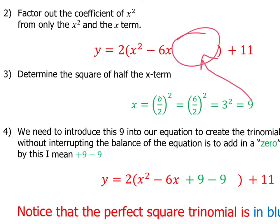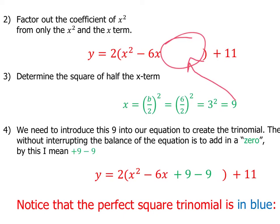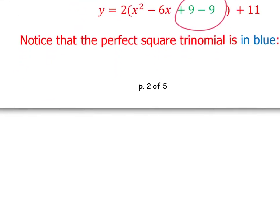Now, the thing is, we have to keep in mind, is that when we introduce a new number into an equation, it creates an imbalance. It interrupts the balance of the equation. So the only way that you can actually do this is by adding in a 0. So right here, what I mean by 0 is adding in plus 9 minus 9. So that's right here.